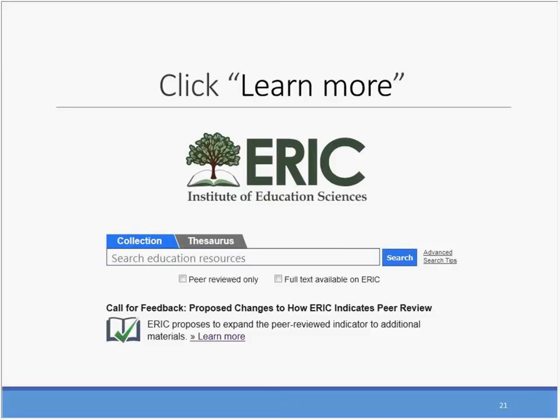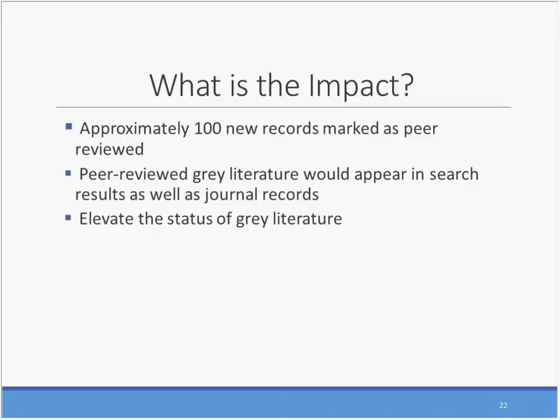To learn more and to read the full proposed policy, please go to the ERIC homepage and click Learn More. To give a sense of scale, we forecast that initially we may be able to add the peer-reviewed indicator to approximately 100 gray literature records per year. The majority of these will be conference papers and government-funded reports. As our process of identifying sources that produce peer-reviewed content matures, we expect this number to grow. We expect this new policy to have a broader implication. ERIC will continue to build upon its tradition of high-quality gray literature and elevate the status of gray literature in the field. During a review cycle, if we find that a gray literature source has a peer review process, they would receive the same collection priority as peer-reviewed journals.